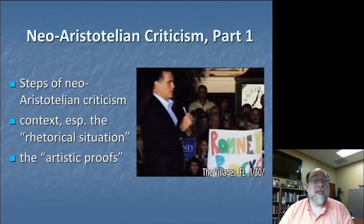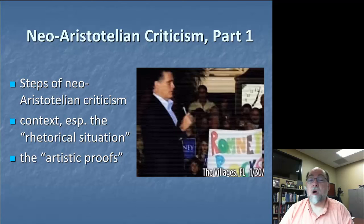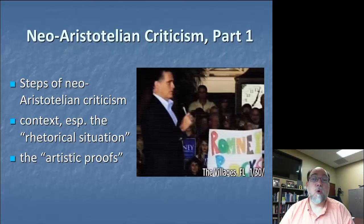So we're going to take it one chunk at a time and focus not just on the overall steps of neo-Aristotelian criticism, explaining what that actually means and why we should care, but then focusing on two primary components of that process that actually can fold into most other forms of rhetorical criticism as well. That's an understanding of the context, and one important framework is Bitzer's notion of the rhetorical situation.